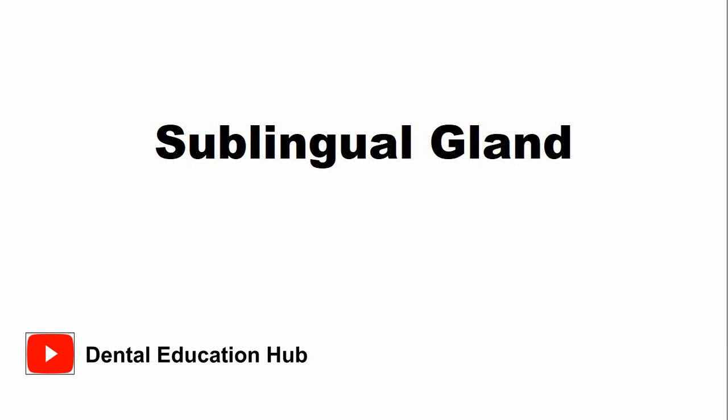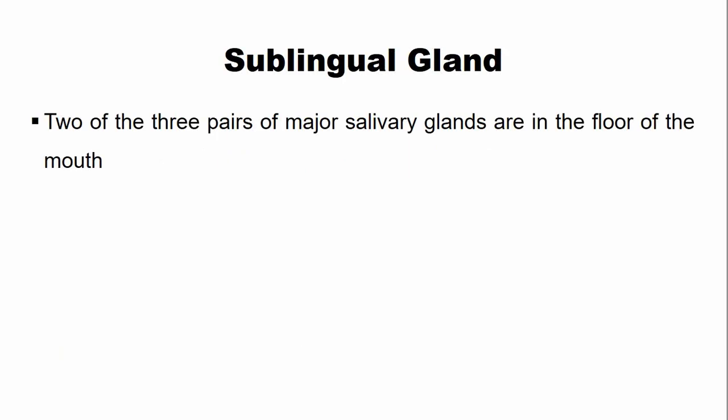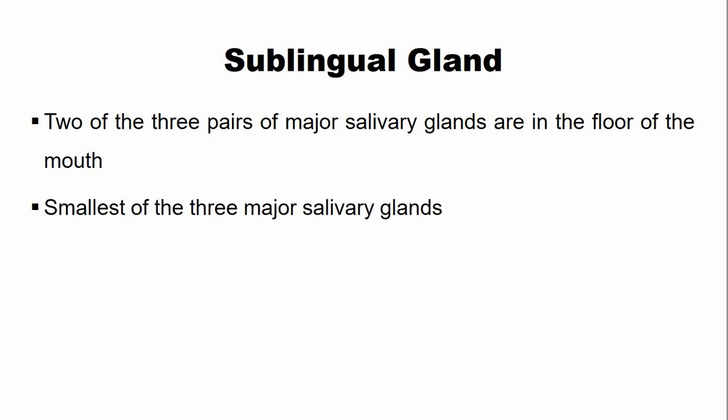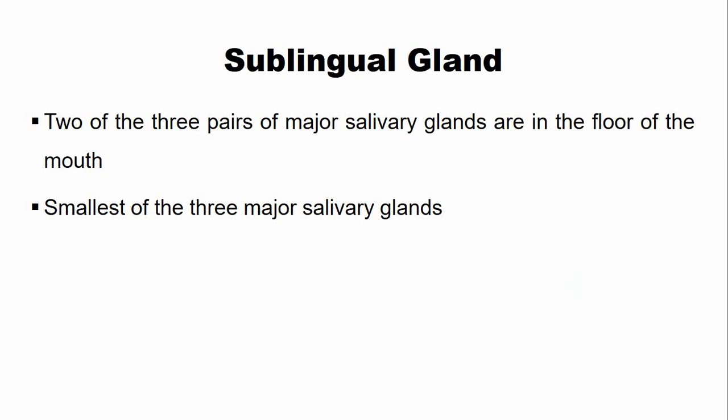The sublingual gland is among the three major salivary glands located in the floor of the mouth. Another major salivary gland, the parotid gland, is located in front of the external ear. The sublingual gland is the smallest of the three major salivary glands, with the largest being the parotid gland.